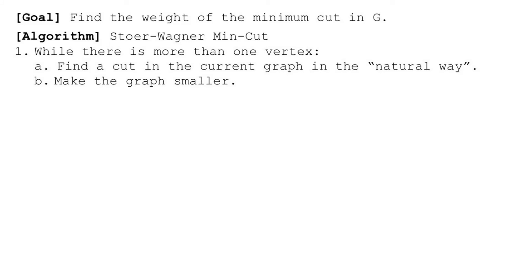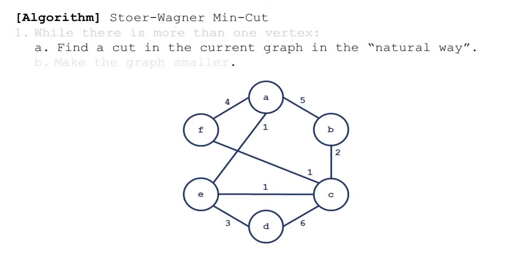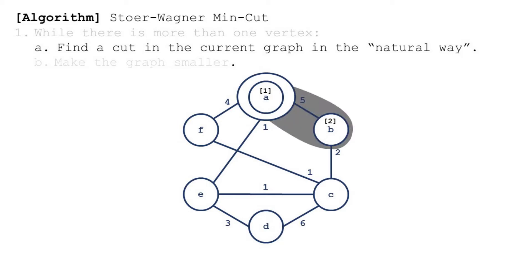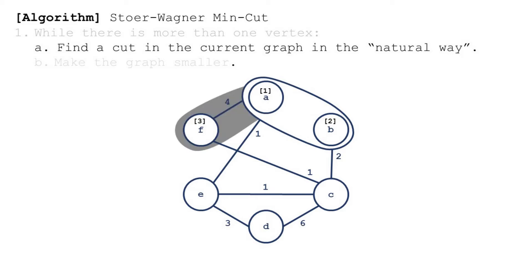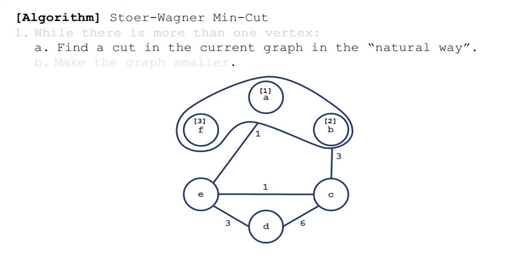With this in mind, let's look at the algorithm. It consists of several iterations where in every iteration we find a cut in what I'm calling a 'natural way,' and then we make the graph smaller. First, let's see an example of finding the cut in the natural way. We start with a set containing an arbitrary vertex, here A. While there are vertices not in the set, we find the node whose edge to A is maximized — here B. Then we create a super node consisting of all vertices in the set, find the vertex whose edge to the super node has the largest weight — here F — and repeat.